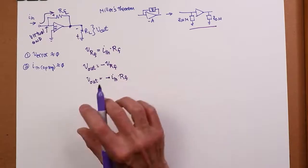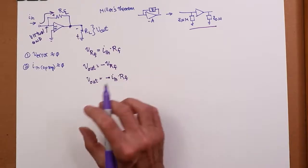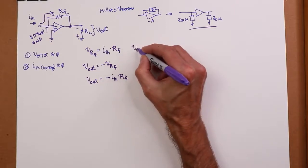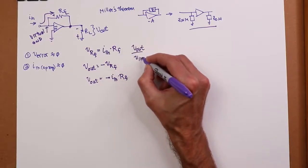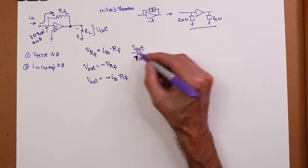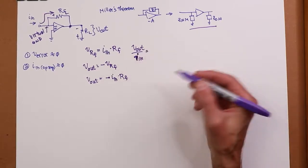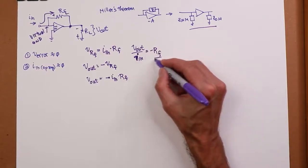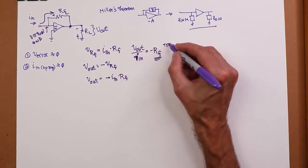So if we look at it as an output input ratio, in other words, Vout over IN, that just equals negative RF. So RF is referred to as the transresistance of the amplifier.